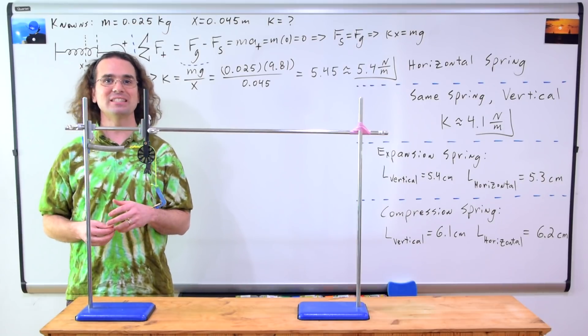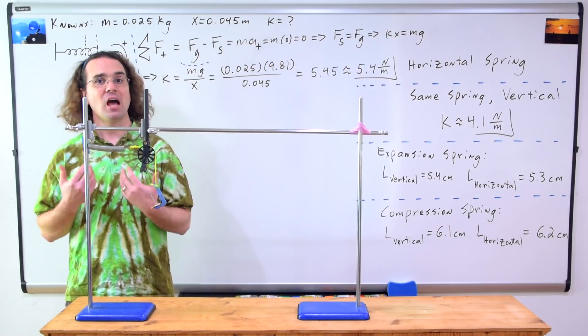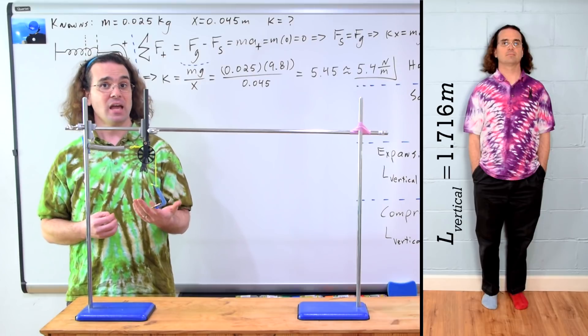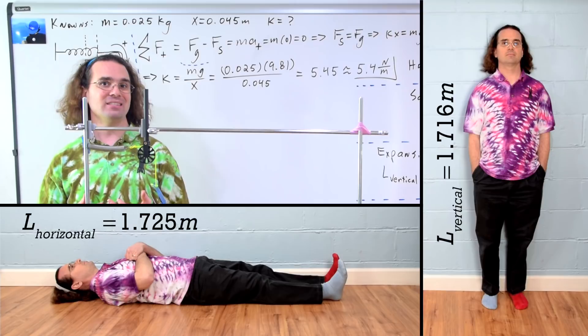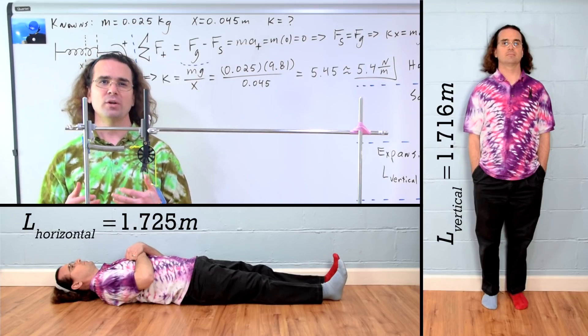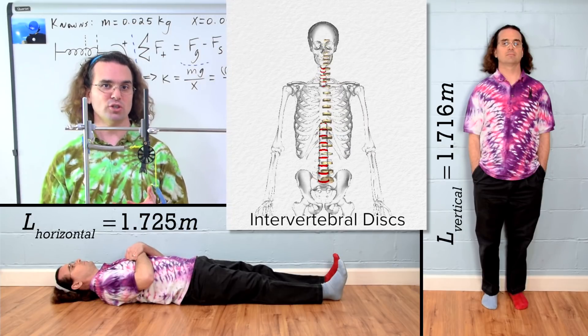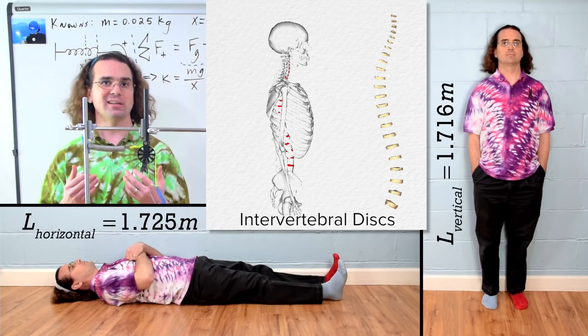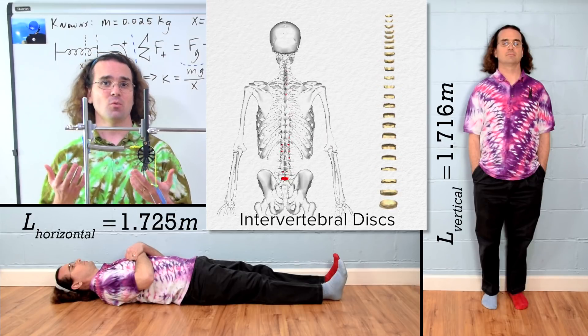Our vertical height when standing is smaller than our horizontal length when lying down. For example, I measured my vertical height to be 1.716 meters while standing, and my horizontal length to be 1.725 meters while lying down. That is a 9 millimeter difference in height between standing and lying down. When humans stand, the intervertebral discs, which are layers of squishy cartilage between the vertebra of our spine, act like compression springs and get squished slightly. This decreases our height when standing.